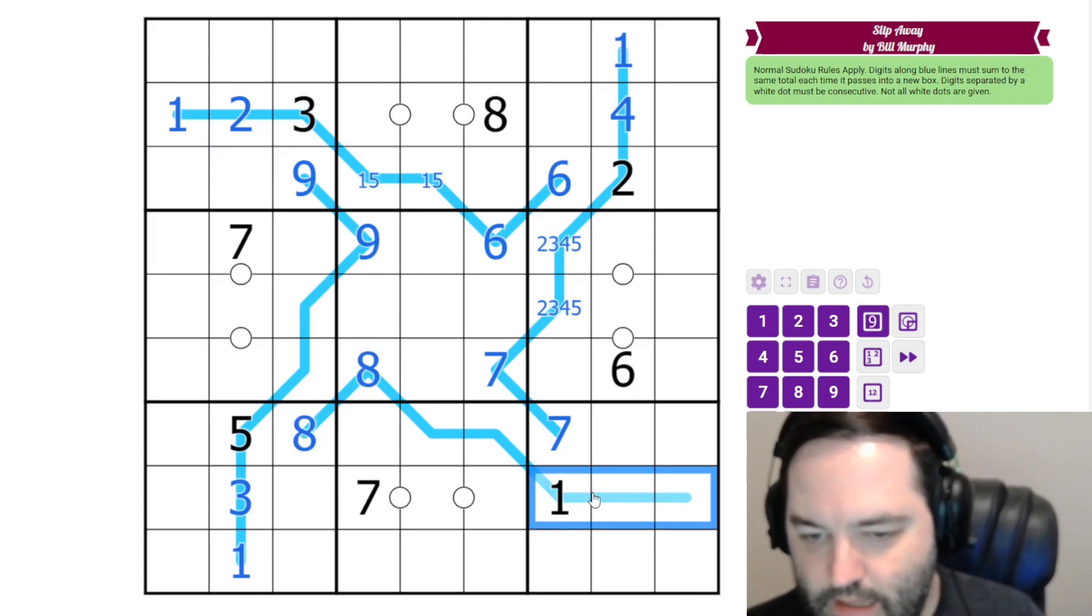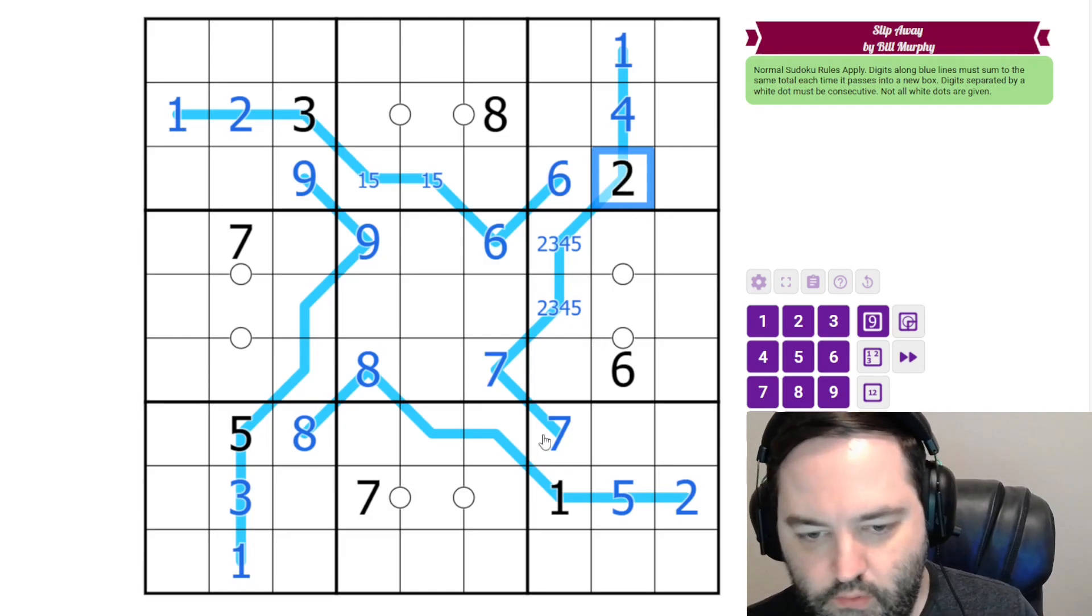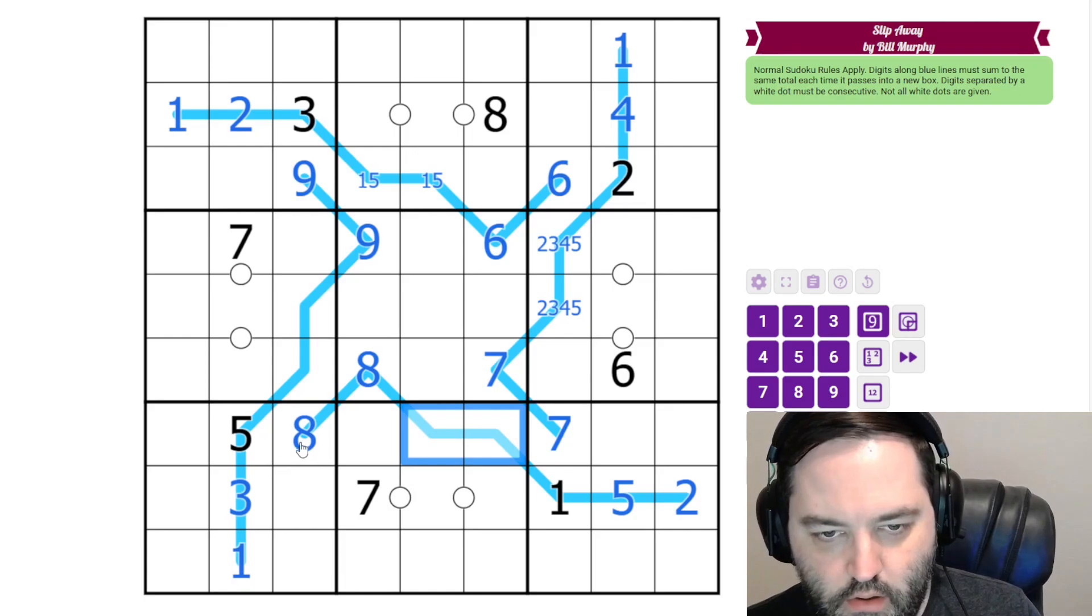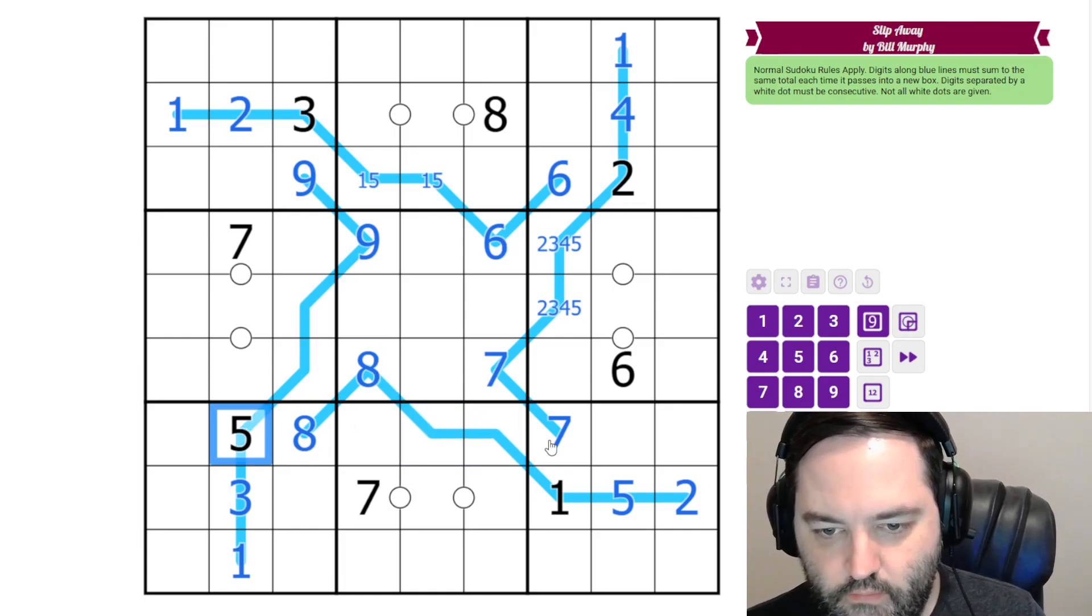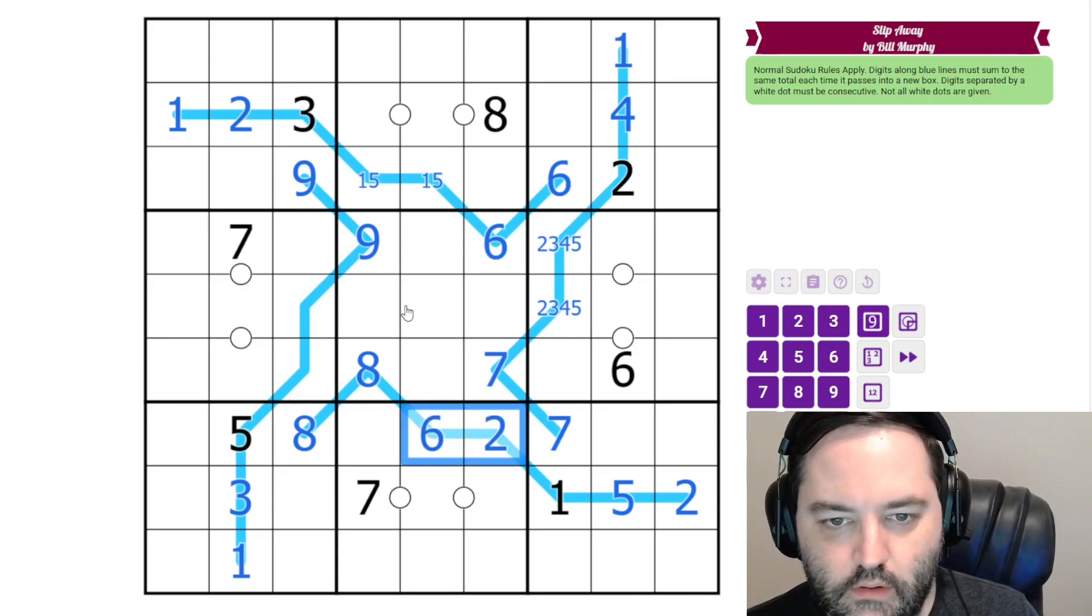And now to make 8 in 3 cells, we can have 1, 2, 5, or we can have 1, 3, 4, but we have 3 in the row. So this is 1, 2, 5, and the order is resolved by that 2. These 2 cells sum to 8. Can't be 3, 5. Can't be 1, 7. So they must be 2, 6. Can't have 4, 4 either, because they see each other.